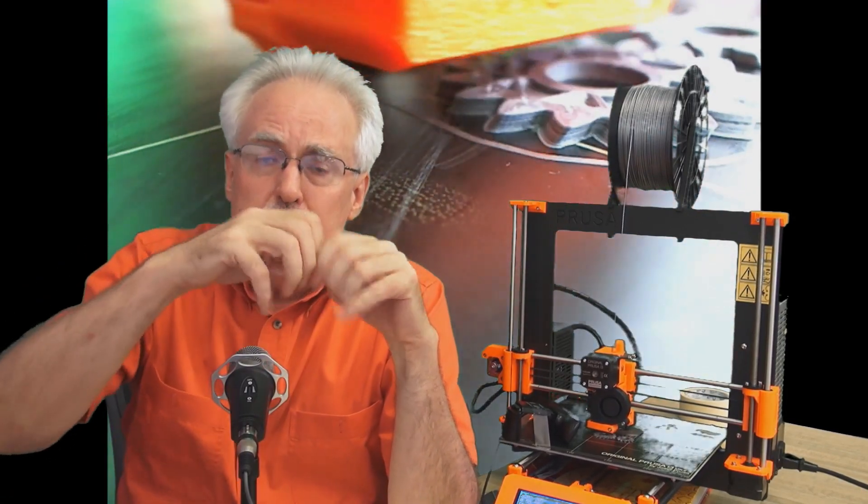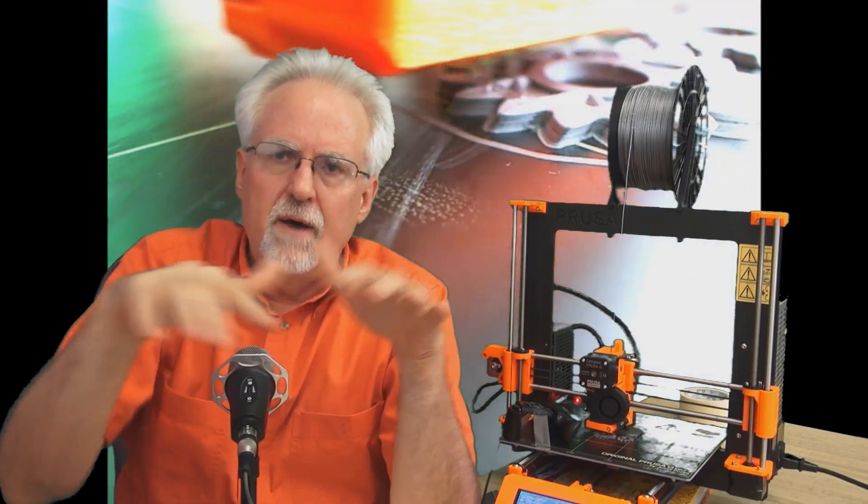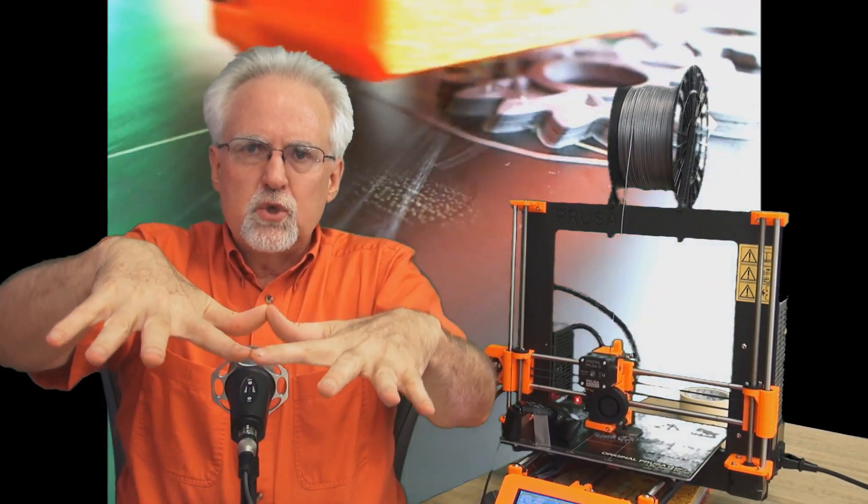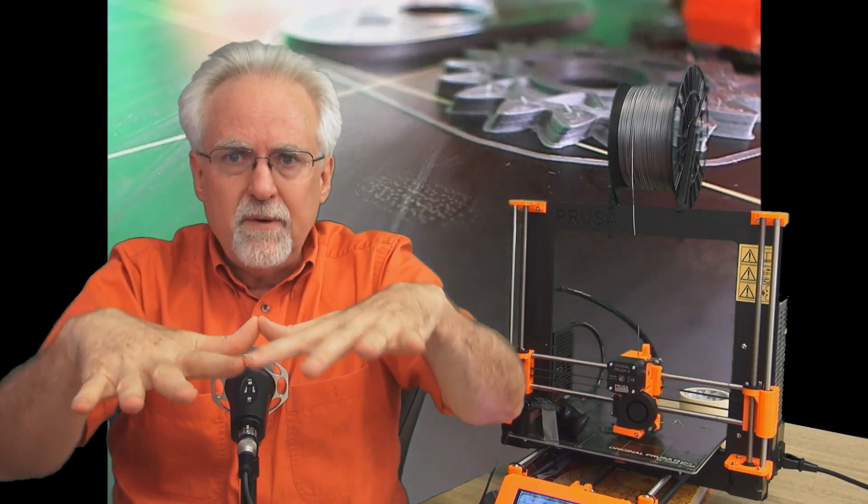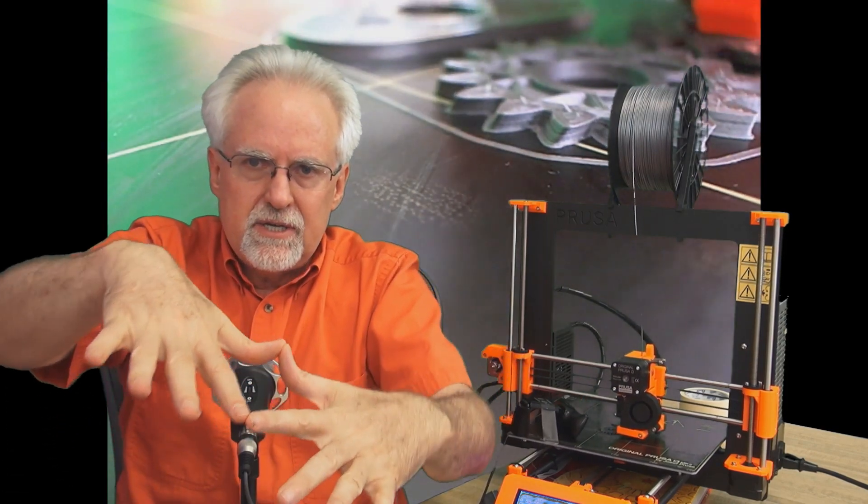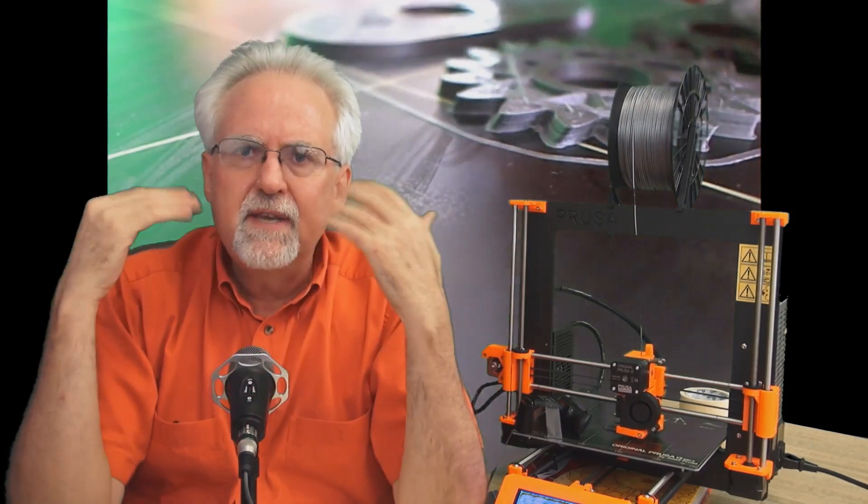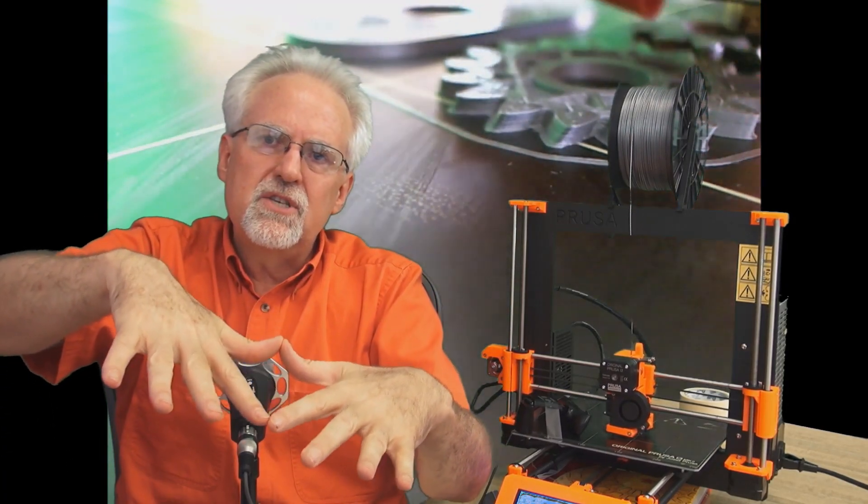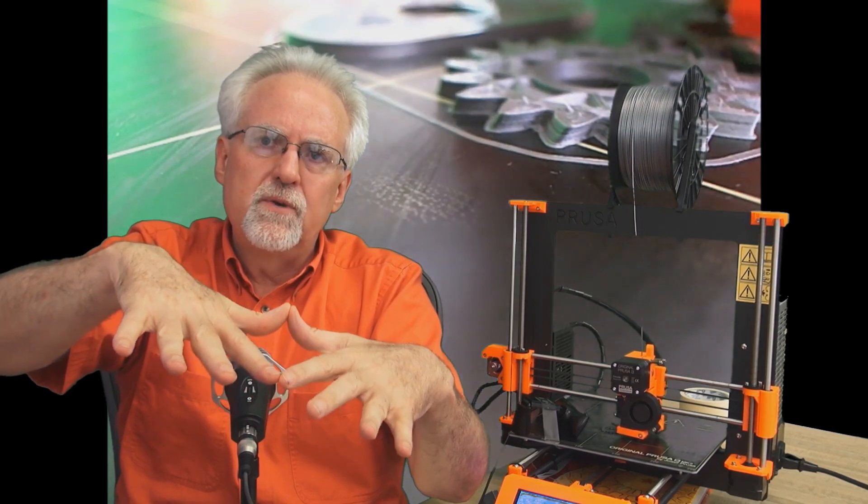So what's different about the Prusa than the other printers that I've tried? It seems to have this ability to automatically level the build plate. And what it does is it has a sensor on the printhead. And when you start a print, it goes to the four corners of the build plate and it makes a measurement. So it sort of sees where the build plate is. And then it has a feature that it calls an auto-level feature. Well, I don't think that it actually changes or actually levels the build plate, but I think that it just superimposes into the slicing software where it knows the build plate is.